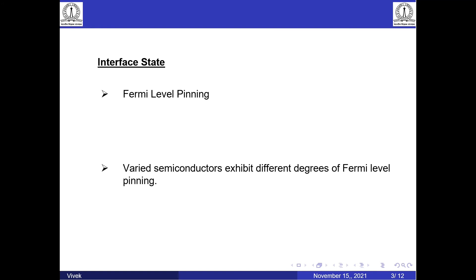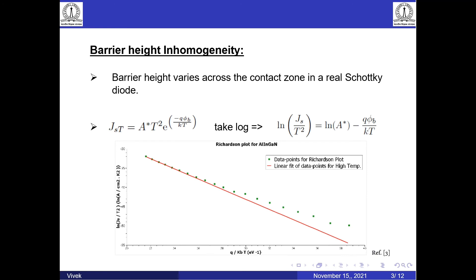Various semiconductors exhibit different degrees of Fermi level pinning. Regarding barrier height inhomogeneity — in reality, the barrier height is not constant throughout the contact region. Changes in the interfacial layer composition produce these barrier height variations. We know the formula for reverse saturation current; taking the log on both sides, we get an equation according to which if we plot ln(J_S/T²) versus q/kT, we should get linear behavior. Looking at the plot for aluminum indium gallium nitride, we can clearly see large deviations in the low temperature region, but for high temperature we have a linear relation where the ideality factor is close to 1.